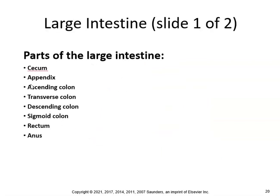The parts of the large intestine include: the cecum, the appendix, ascending colon, transverse colon, descending colon, sigmoid colon, rectum, and the anus. The large intestine extends all the way from the ileum to the anus, receives fluid waste from digestion, and stores it until it can be released. Know the sections of the colon and their locations.